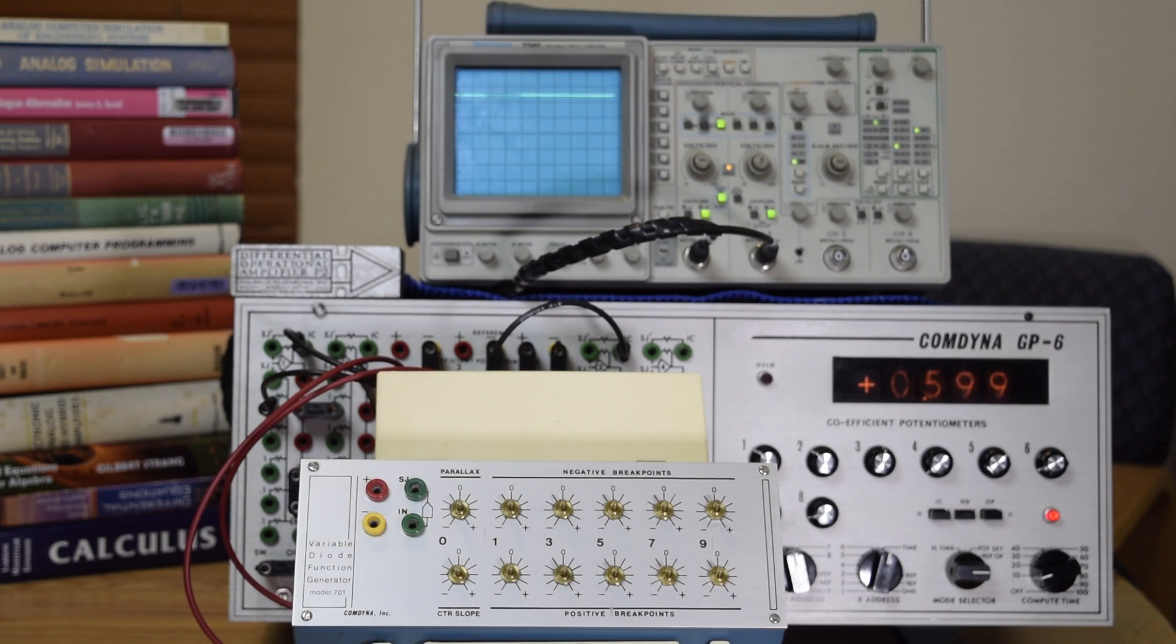The diode function generator is a device for performing a function of a variable other than time. In the analog computer, a typical function will be a function of time, but in some cases you'll need to run one of the system variables through a nonlinear function that can't easily be generated with the internal components of the analog computer. So that's where the diode function generator comes in. I'll demonstrate the diode function generator in a later video, assuming it works. I haven't had a chance to test this out yet, but it'll be a fairly interesting addition for some analog computations.